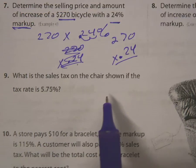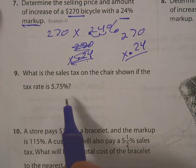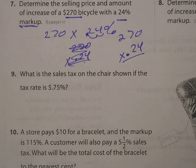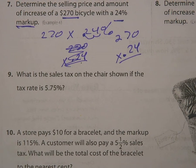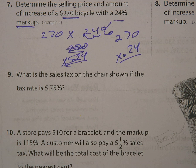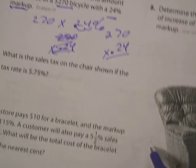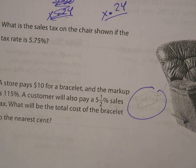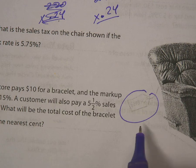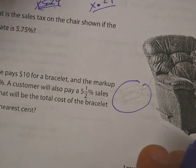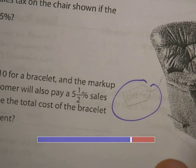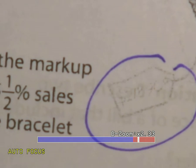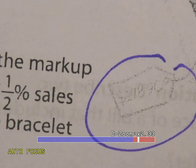Number nine: what is the sales tax on the chair shown if the tax rate is 5.75%? It has a price shown — I can see it on my paper. Let me check the page.